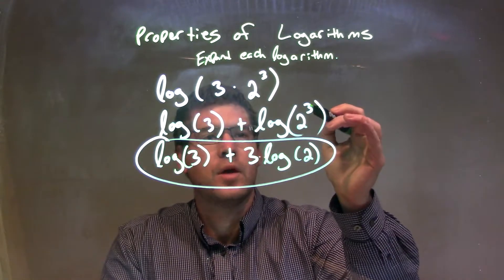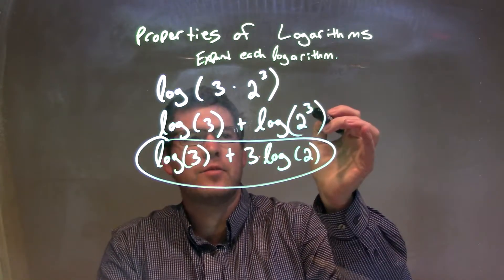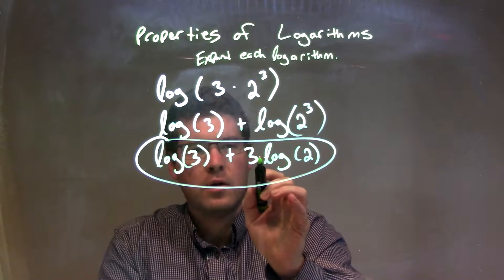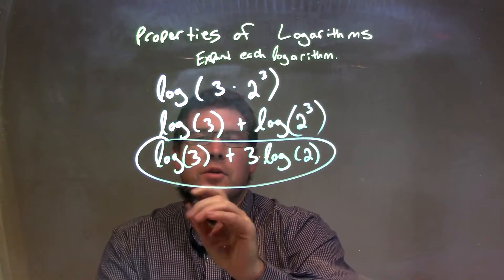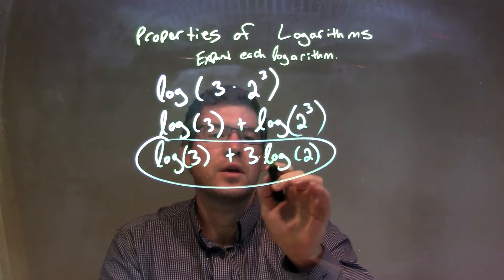Then that exponent can come down up front, another one of our expansion rules, in front of the log, giving me my final answer of log of 3 plus 3 log of 2.